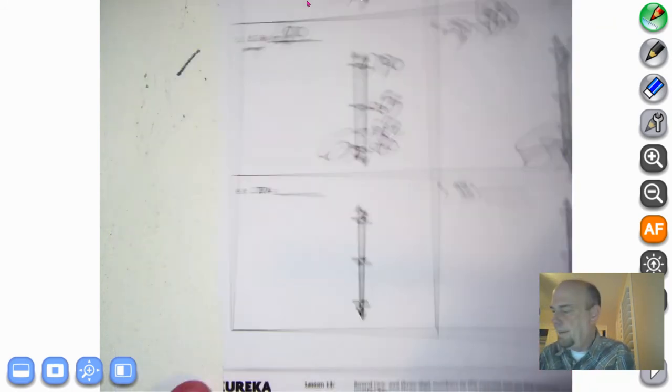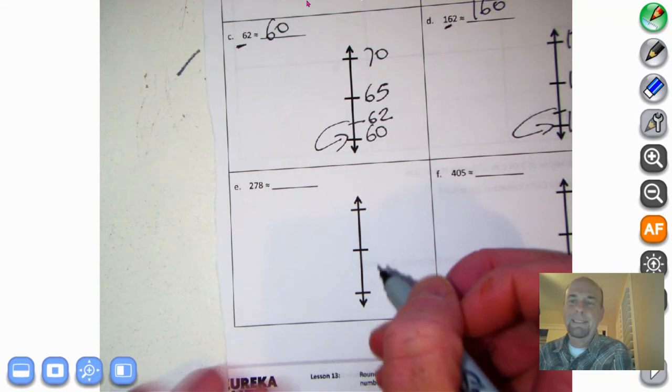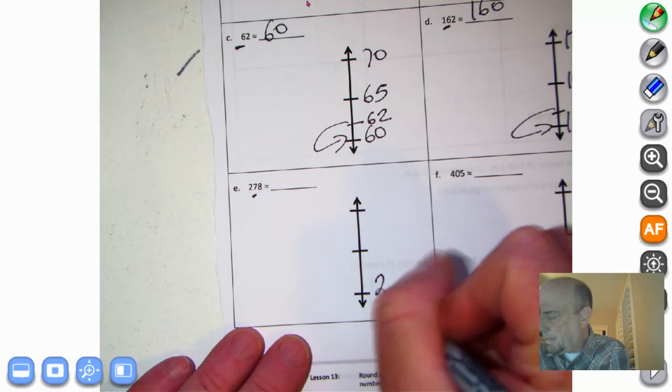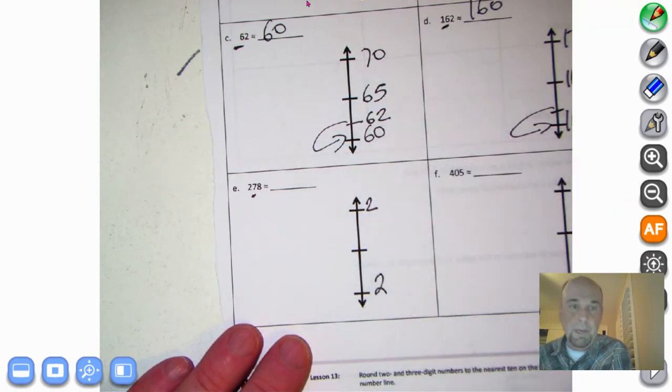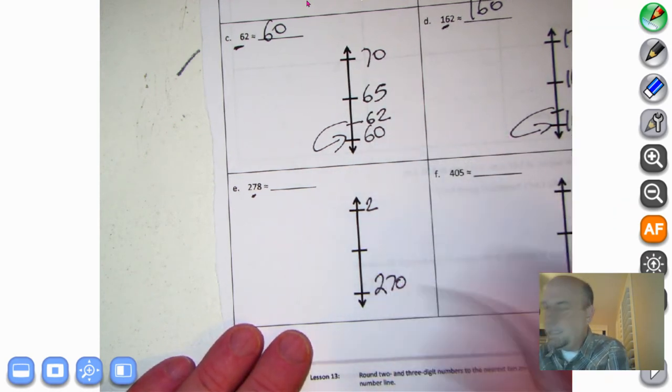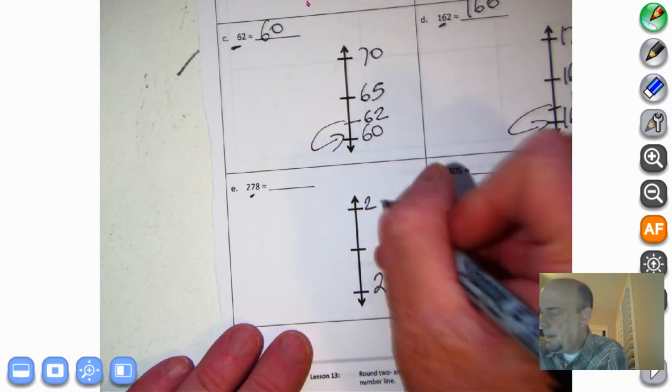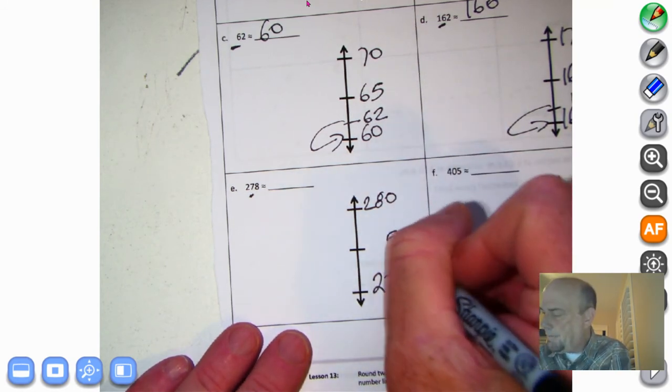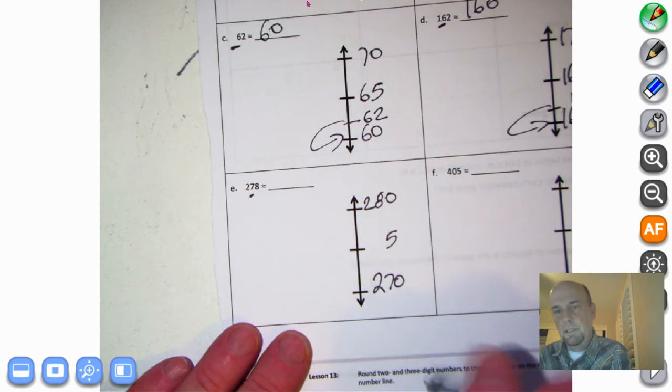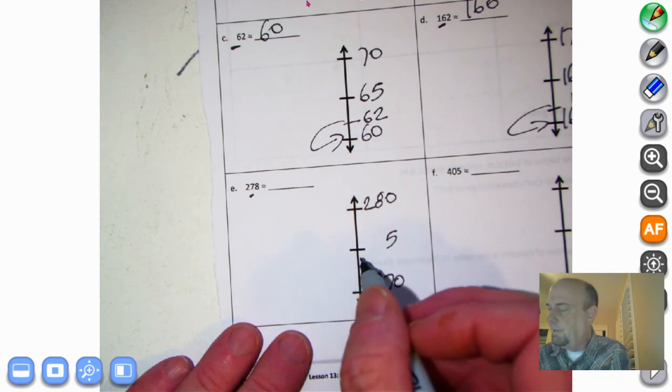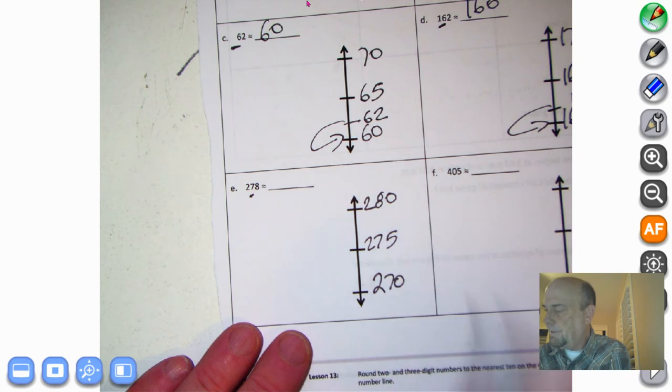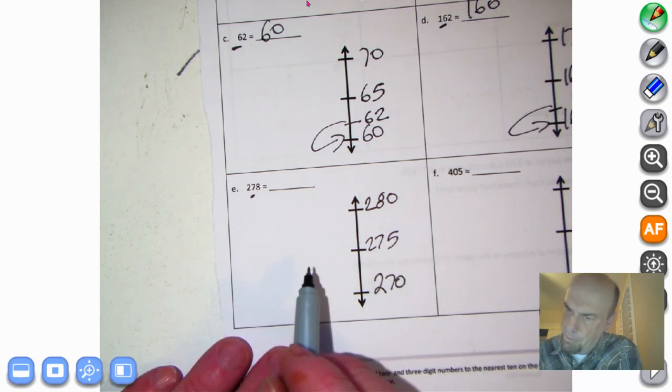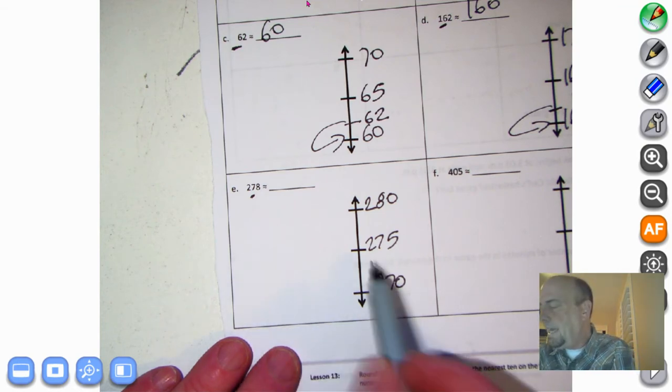All right, here we go. 278. Well, look at our 10 spot. 70. But we have that hundreds. I'm going to put a hundreds there and a hundreds there. It's two hundreds, right? 10 spot is 70. What's 10 more than 270? By golly, I hope you said 280. What's our halfway point? I know it has to have a five in it. What makes sense? 271, 272, 274, 275. So that's our midway point. But where does this land in the world of the midway or halfway point? It's 278.